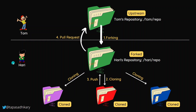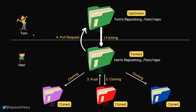Tom has a repository with certain files and manages this project. Harry thinks it's a cool project and wants to contribute to it. Tom can make the project public so everybody can see it, but there's a catch — Harry can see it but still needs to be part of the project to contribute, meaning changing code, doing pull requests, and so on. One way is for Harry to ask Tom directly to add him as a contributor.